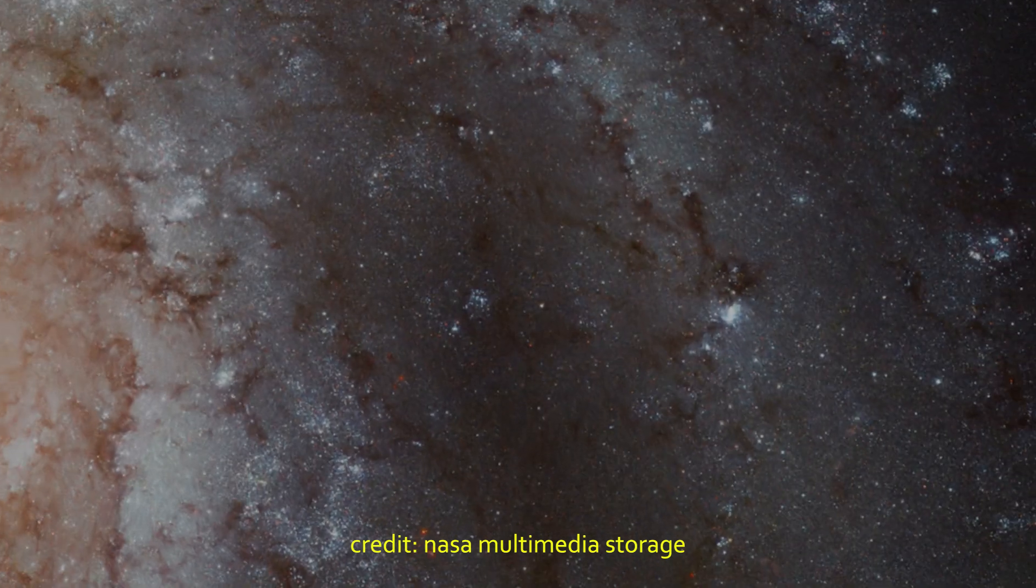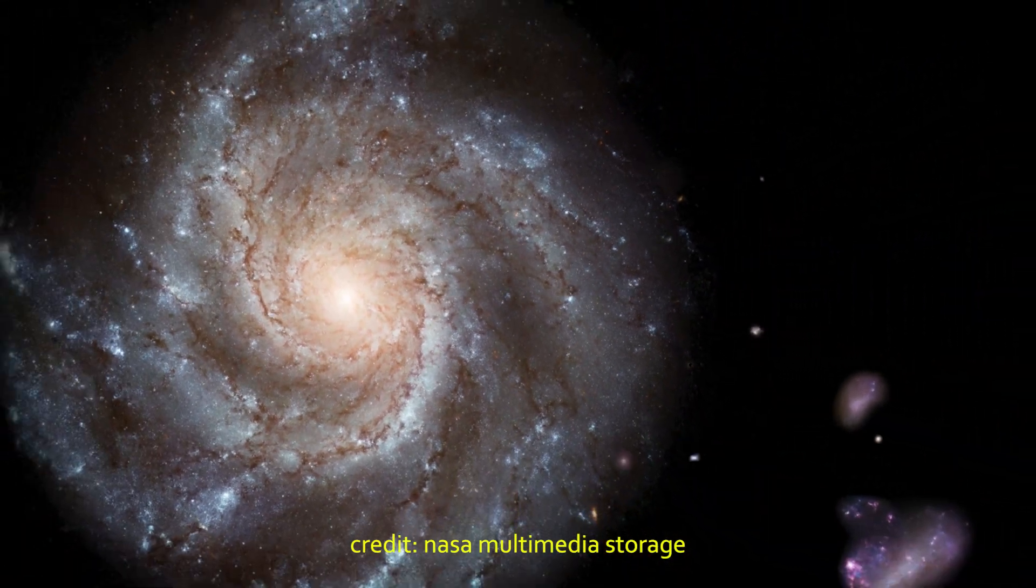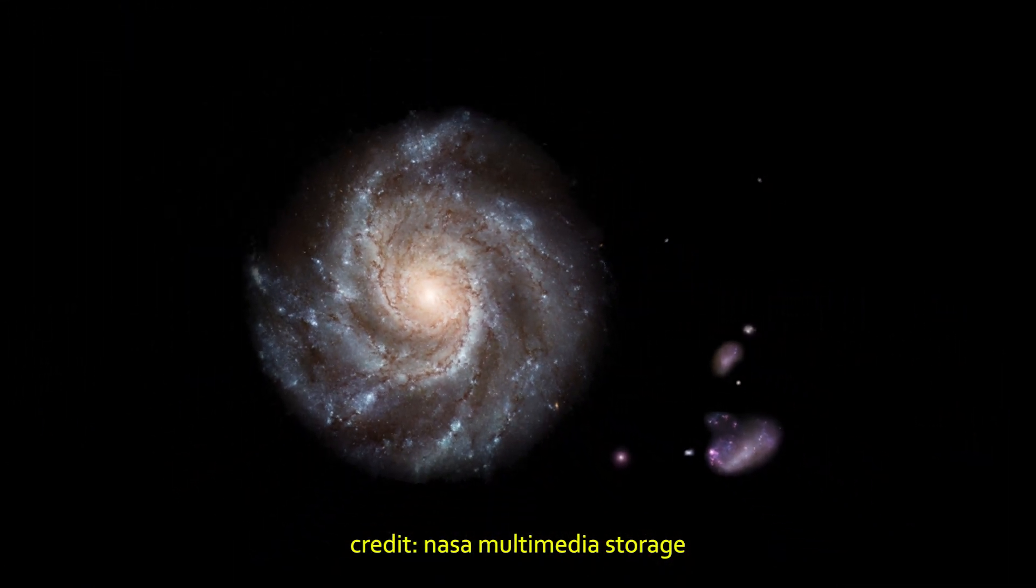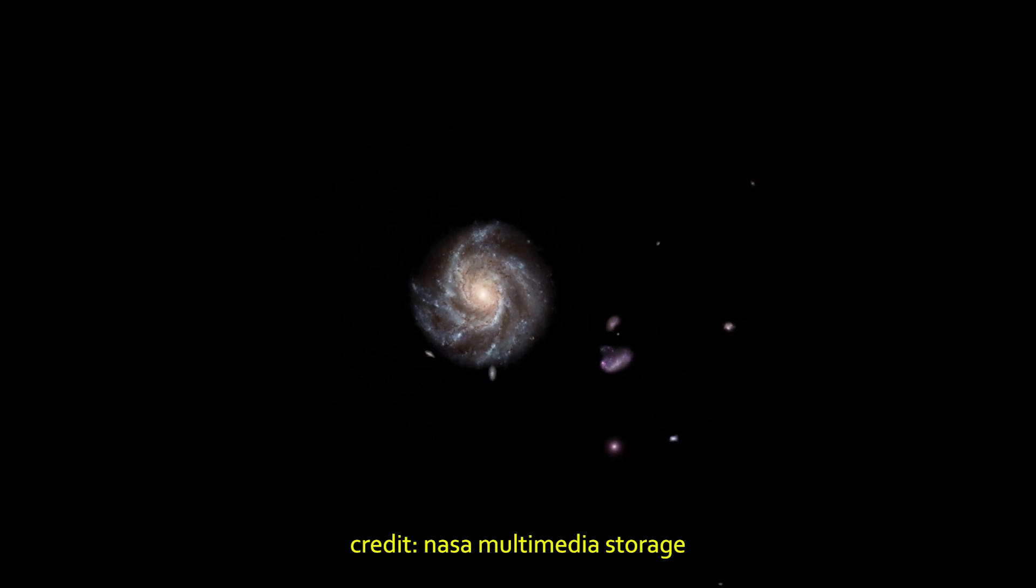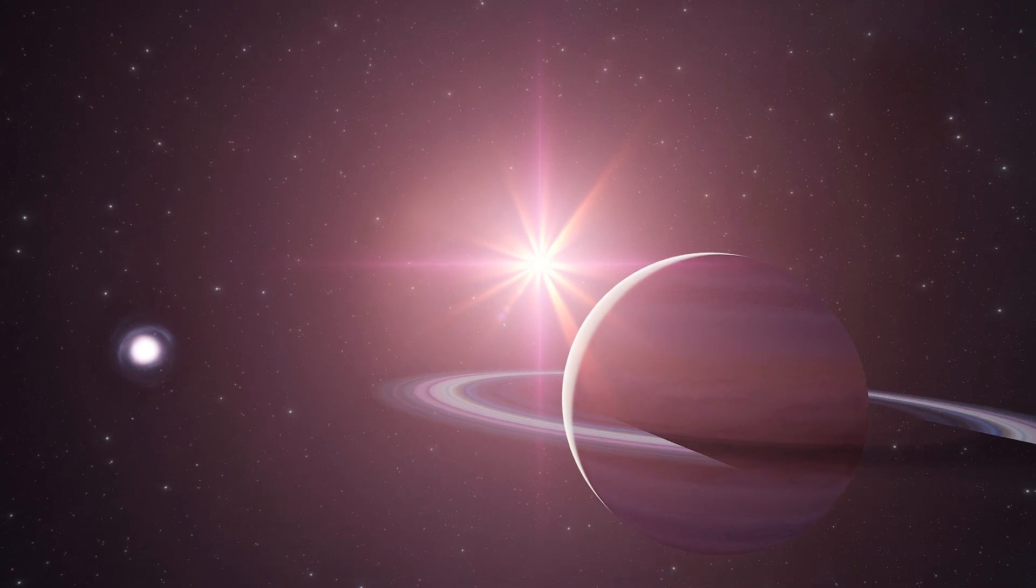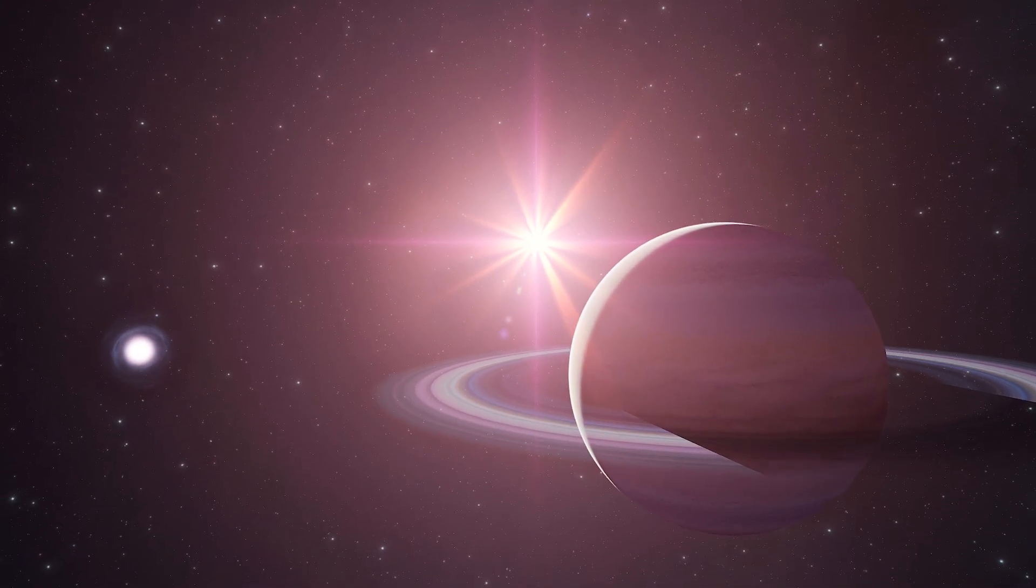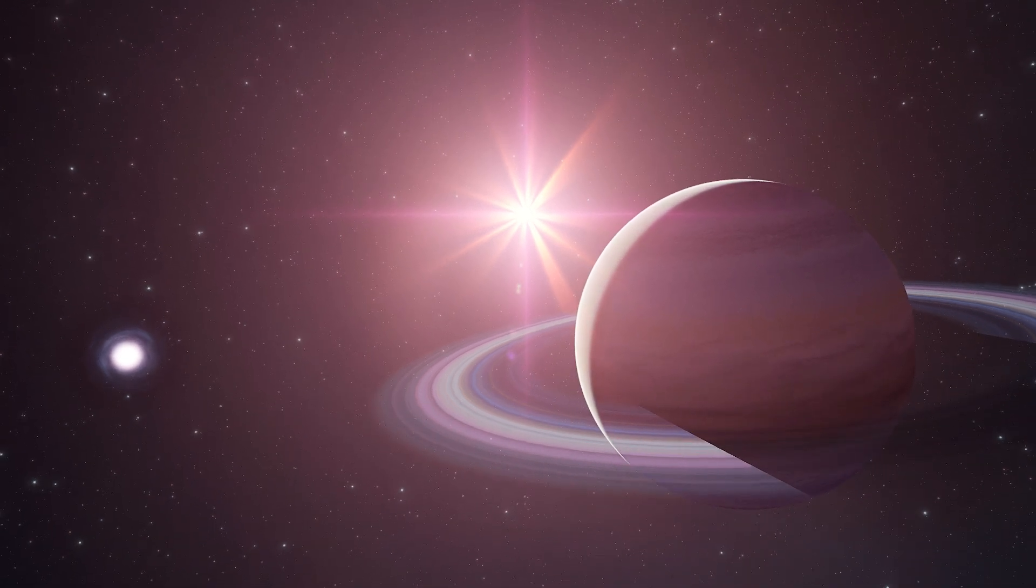Stars like Betelgeuse don't go out quietly. When it starts running low on fuel, the chaos begins. The core begins fusing heavier and heavier elements like carbon, oxygen, silicon, until it hits iron. And here's the deal, fusing iron doesn't release energy, it sucks it up. The star can't hold itself up anymore, and gravity doesn't forgive weakness.